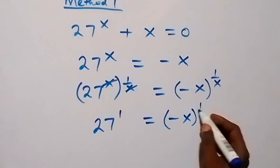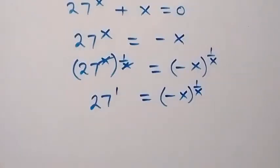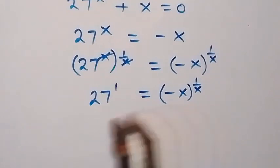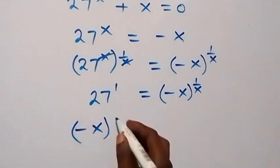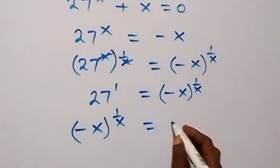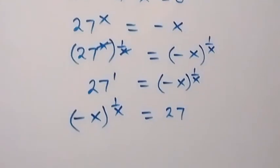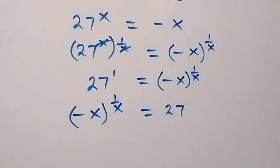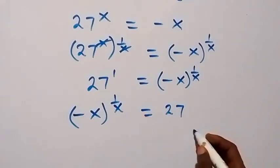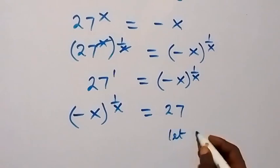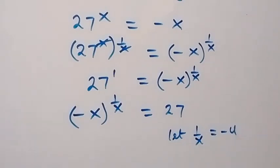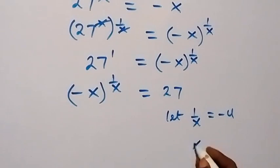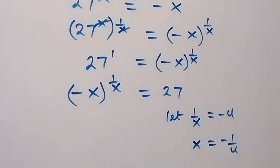We can equally write this as: minus x raised to power 1 over x equals to 27. From here, let 1 over x be equal to minus u. So when we make x the subject, x equals to minus 1 over u.